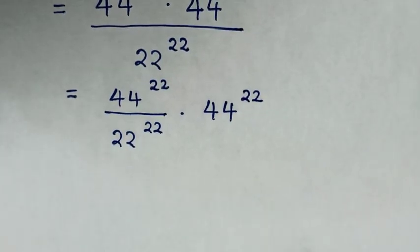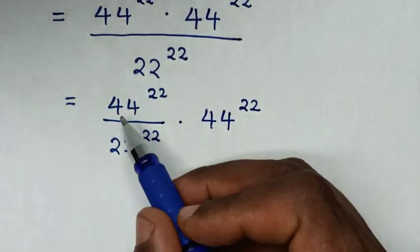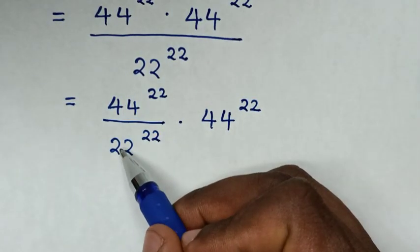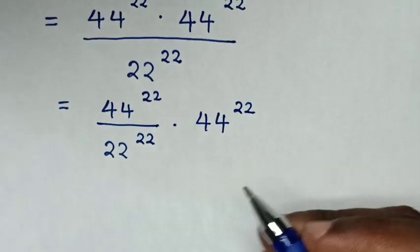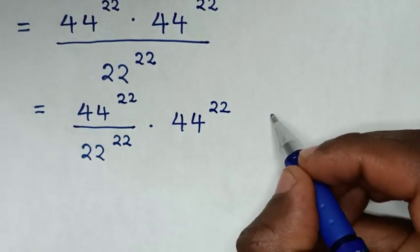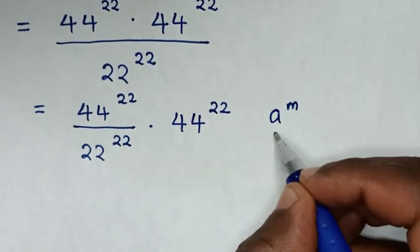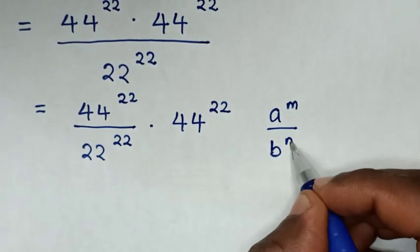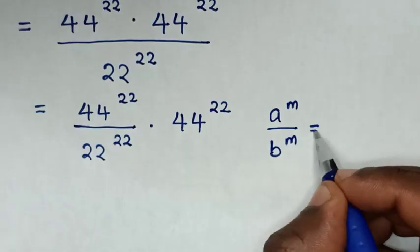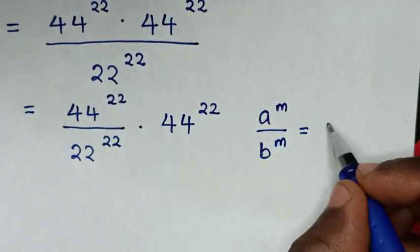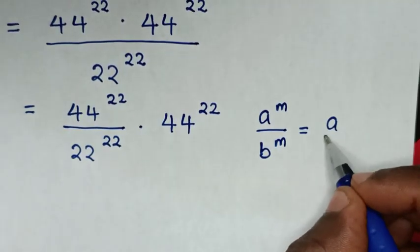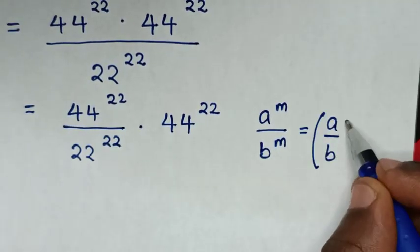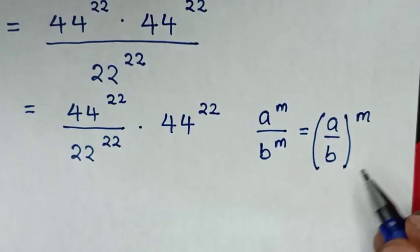In the next step, this division of exponents is in the form of a power of m over b power of m, which is equal to (a over b) bracket power of m.